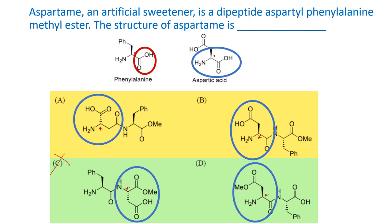In the remaining options A, B, and D, the N-terminal part of aspartic acid is free, confirming it is the N-terminal. The next point to check is whether the amide bond is formed using the alpha carboxylic acid or the beta carboxylic acid. In structure A, the alpha carboxylic acid is unreacted and it is the beta carboxylic acid that has reacted to form the amide bond. Therefore, structure A cannot be the answer.